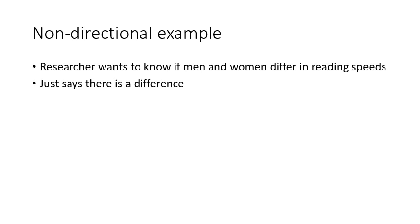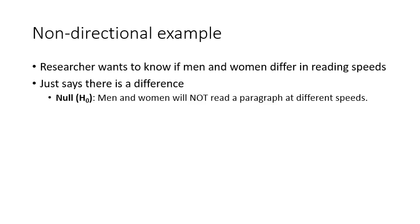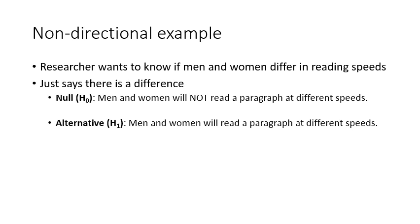Now let's look at a non-directional or two-tailed example. The researcher wants to know if men and women differ in reading speeds — just saying there's a difference. We're not looking for if men are greater than women or if women are greater than men, just to see if there's a difference. Because we're looking just to see if there's a difference, it's two-tailed and non-directional. We do the alternate first: men and women will read a paragraph at different speeds. Then the null is the opposite: they will not read it at different speeds.